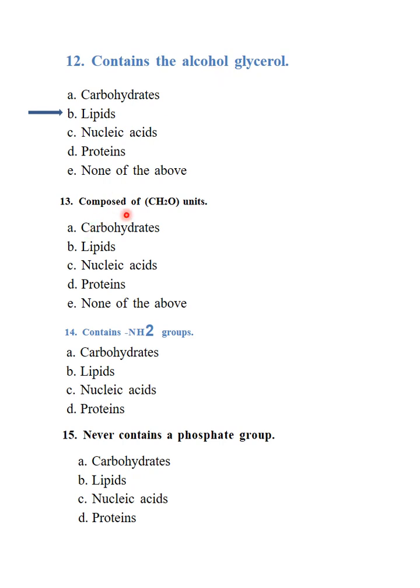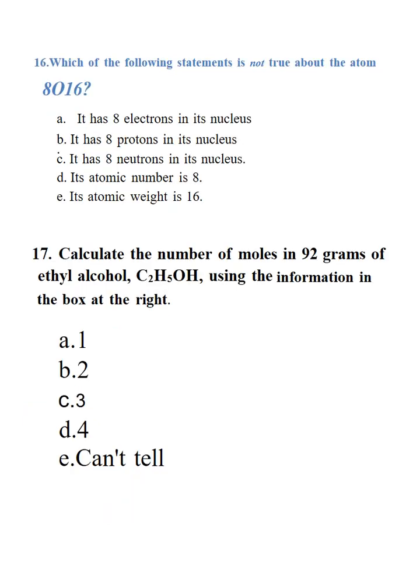Which of the following contains the alcohol glycerol? Lipids contain the alcohol glycerol. Compounds of CH2O are carbohydrates. Which of the following contain NH2 group? Proteins contain the NH2 group because proteins are made up of amino acids and amino group is the most important group of amino acid. Nucleic acids contain the phosphate group. Which of the following statement is not true about the atom oxygen-16? It has 8 electrons in its nucleus. Electrons are never in the nucleus, so this statement is not true. It is option A.